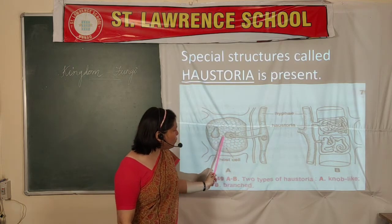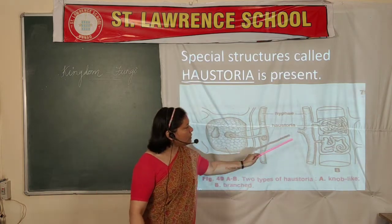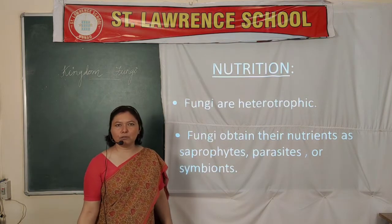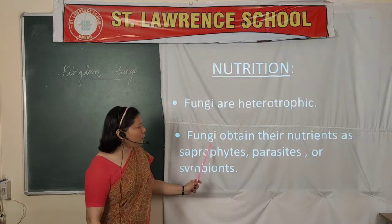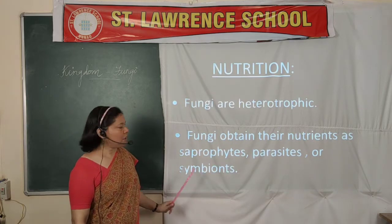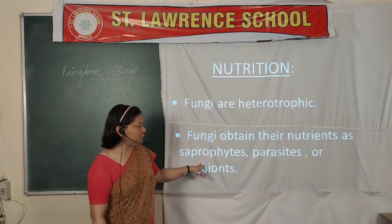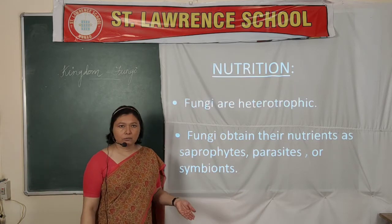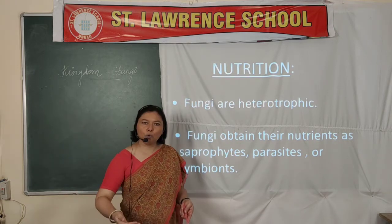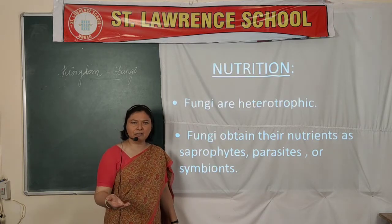There are two types of haustoria: a single knob-like type, and one that forms a dense network with further branches inside the host cell. Because fungi cannot prepare their own food and lack chlorophyll, they are heterotrophic. They obtain nutrients as saprophytes — depending on dead and decaying matter — as parasites depending on living organisms, or as symbionts living in close association with another organism whereby both benefit each other. The best example of symbiosis is lichen.